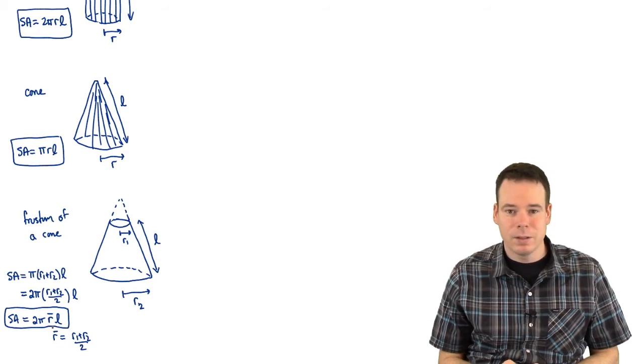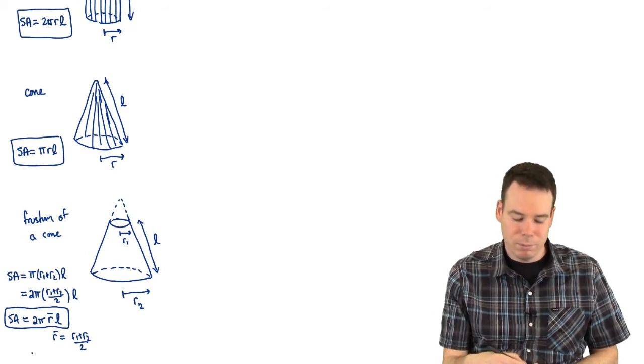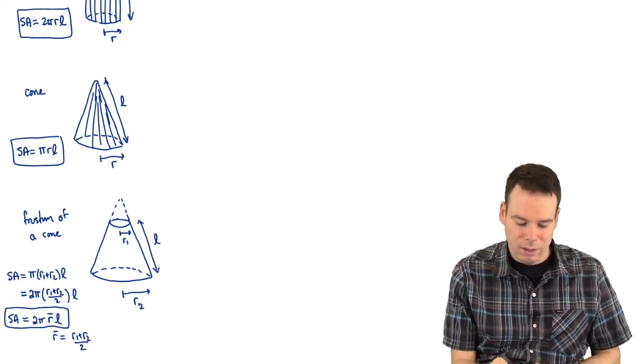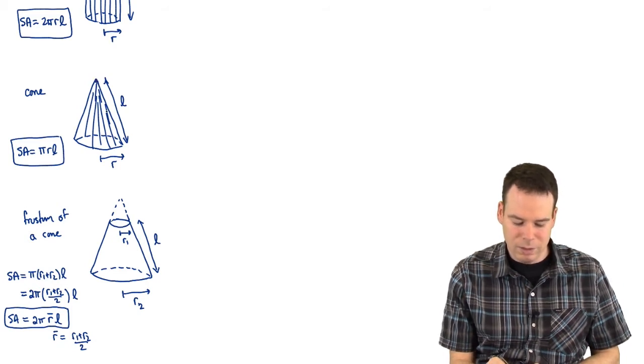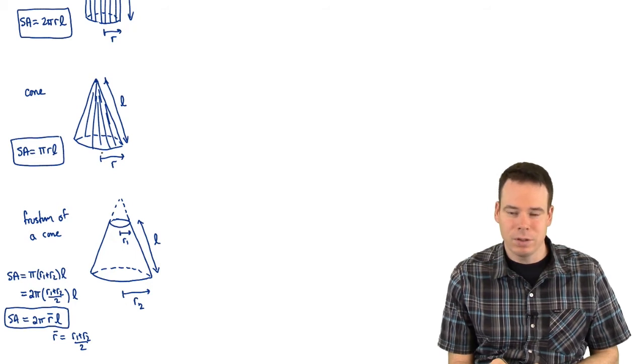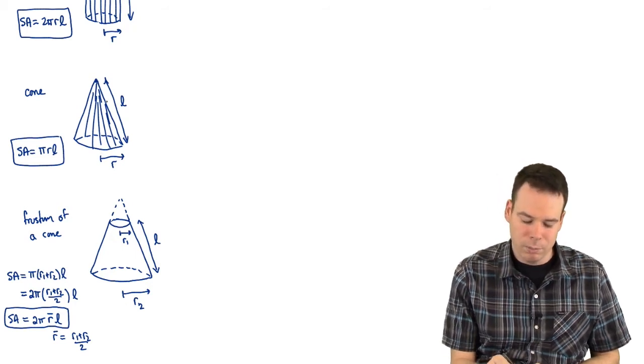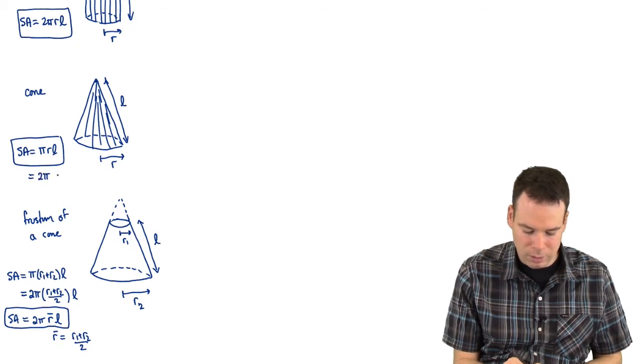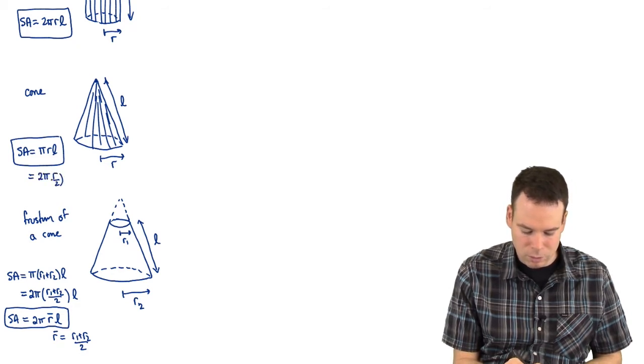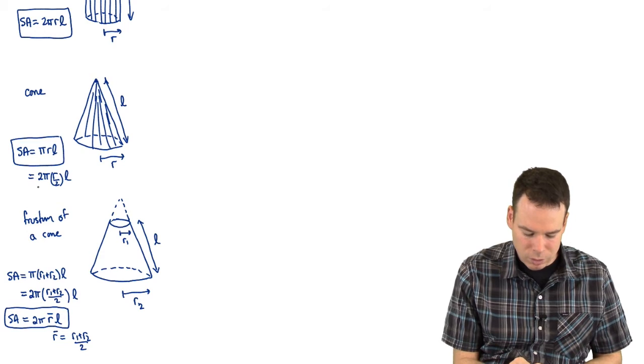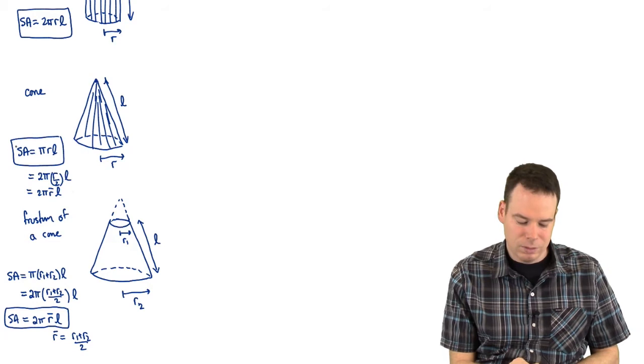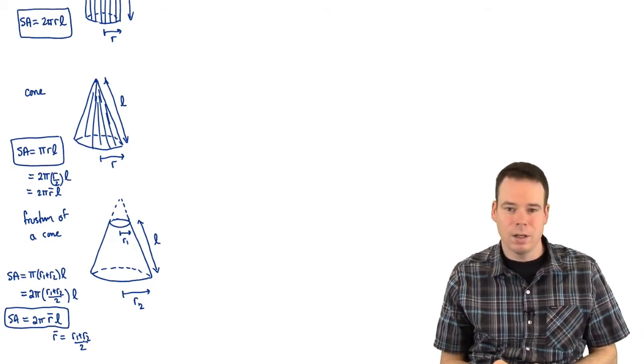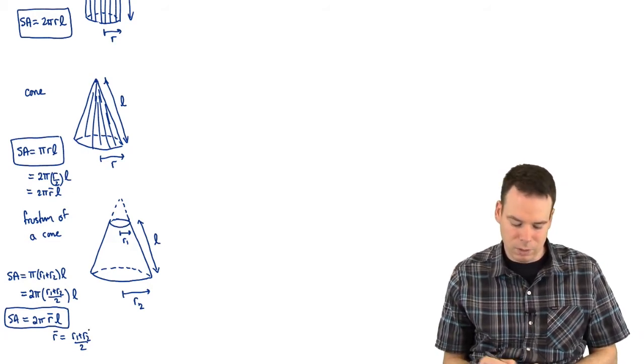Now what that means is if I think about it this way then all of the ones above are special cases. If I think about the cone, the upper circle has radius 0, the bottom one has radius R. What's the average? The average would be (R + 0)/2. So I could write this as 2π(R/2)L which is really just 2πR̄L. So the surface area for a cone is a special case of the surface area for the frustum of a cone.